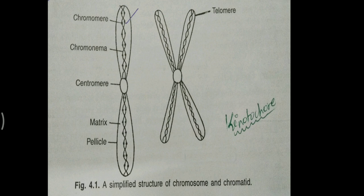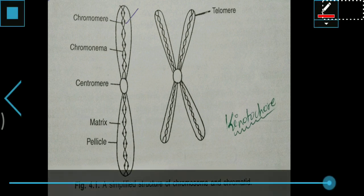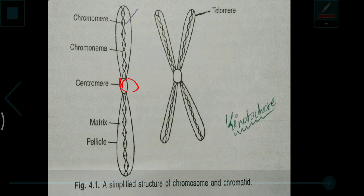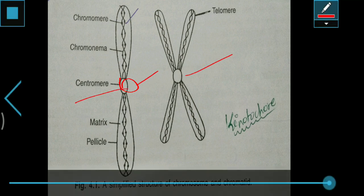Coming to centromere — the region of the chromosome where spindle fibres are attached during the metaphase stage is known as centromere. You can see here, in this place, it's the centromere where spindle fibres are attached like this, and separation occurs during the metaphase stage.